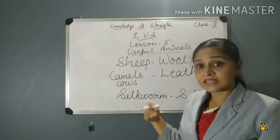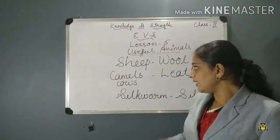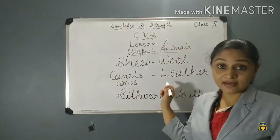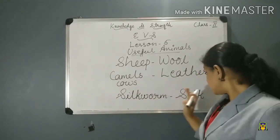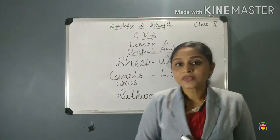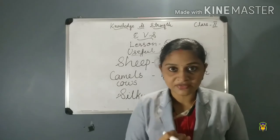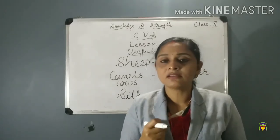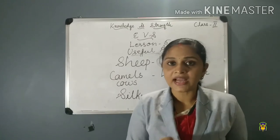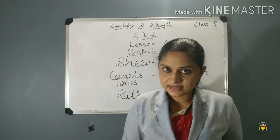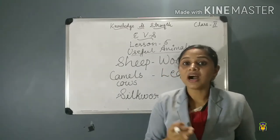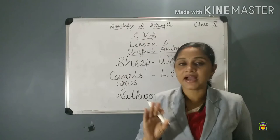Some other uses of animals we will study in the next class. Today we learned that sheep give us wool, camels and cows — their skin is used for making leather, and silkworms give us silk. Let us conclude what we learned today. First, we learned about food items from animals: we get milk, eggs, and meat. The animals that people keep at home are called farm animals — for example, cow, goat, buffalo, hen, and duck.